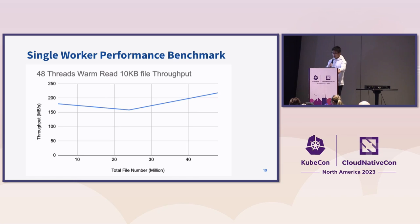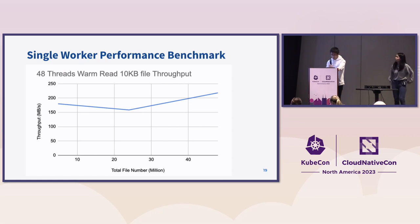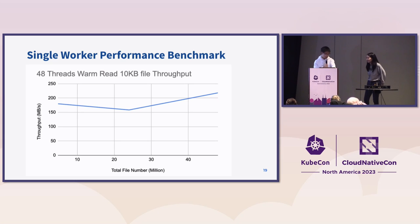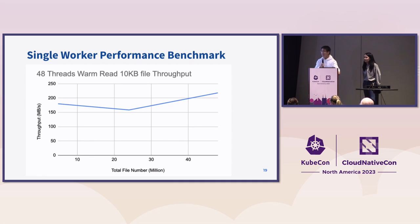Looking at some benchmarks, we tested one single worker with 48 threads reading files of size 10 kilobytes. There are three data points with total file numbers of approximately 4 million, 24 million, and 48 million. We can see there is no apparent performance downgrade even though the file count increases by about 10x.